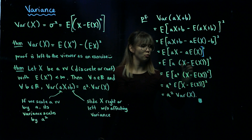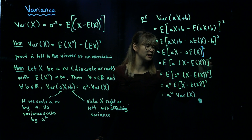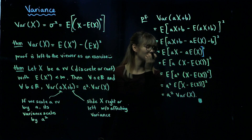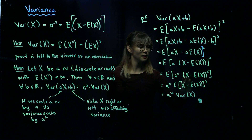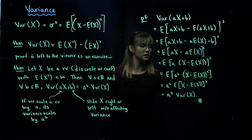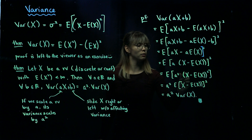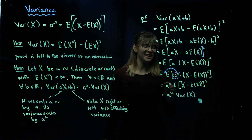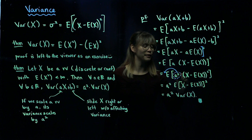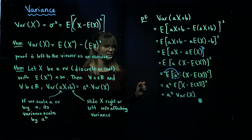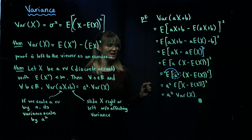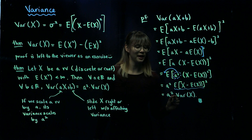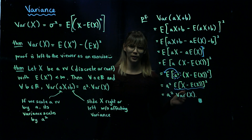Now we see that a is within the square brackets and we're squaring the contents, so we can write this as a squared times the quantity X minus the expected value of X, all squared. We then pull the a squared out of the expectation, giving us a squared times the expected value of the quantity X minus the expected value of X, squared. We recognize this as the variance of X, so the result is a squared times the variance of X.